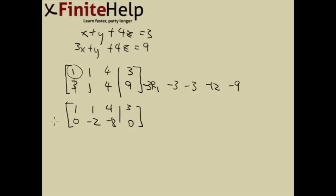I'll multiply this row by negative 1.5 to make this a 1. That's going to make this row 0, 1, 4, 0. Here's 1, 1, 4, 3 for row 1 still.